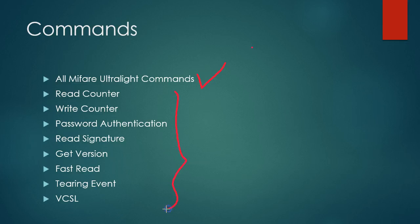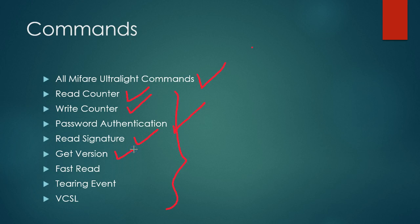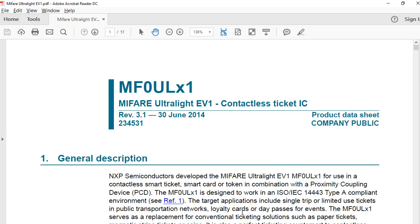These are the new commands available in the stack. Because there is a counter, obviously there must be commands to read and write the counter. We are going to see the command for password authentication, a command for read signature, and a command called get version information, as well as fast read, tearing event, and finally VCSL. Before you start working with this tag, I would advise you to get a copy of the NXP documentation, which you can download from the NXP website or find on the internet.